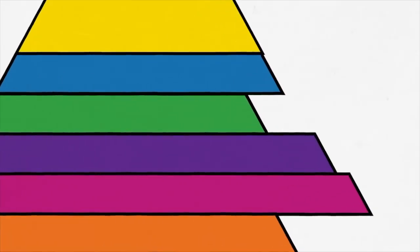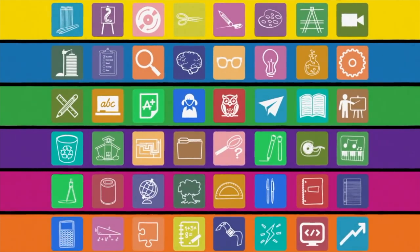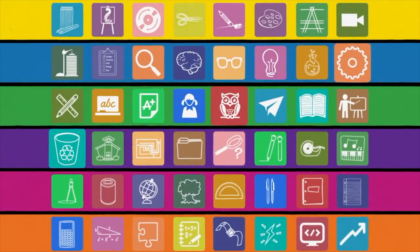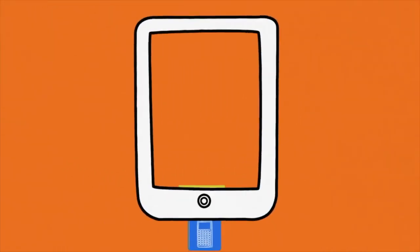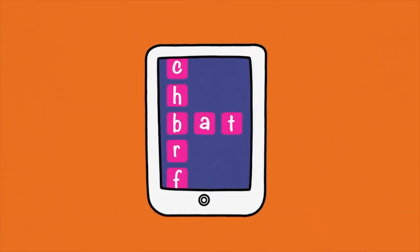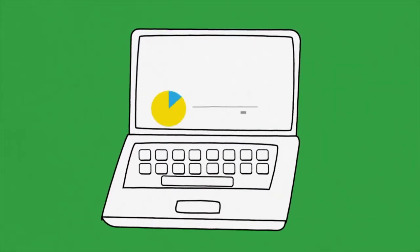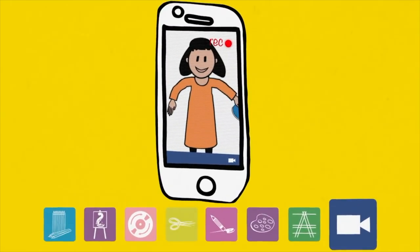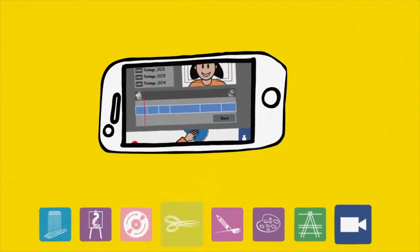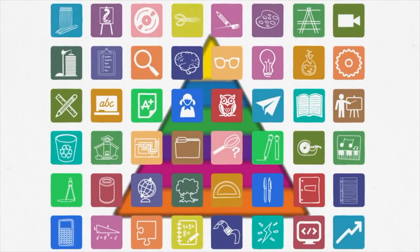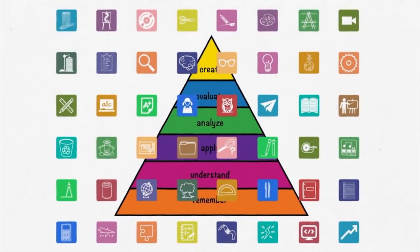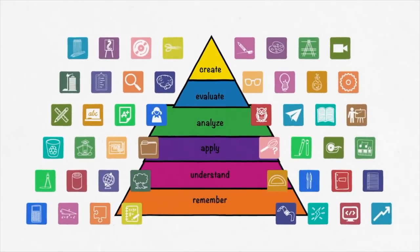Others have taken the six levels of the taxonomy and aligned them with technology tools that help foster each level. For example, as a teacher you can think about how to integrate apps and websites that help students remember content, like flashcards or drill-and-practice tools. There are tools that help students analyze and make sense of content, like reading charts, graphs, or mind maps. Or you can think about what tools support student creation, like producing, podcasting, blogging, coding, editing, and more. The focus should not be on the tools themselves, but on how the tools can be vehicles in transforming student thinking at different levels.